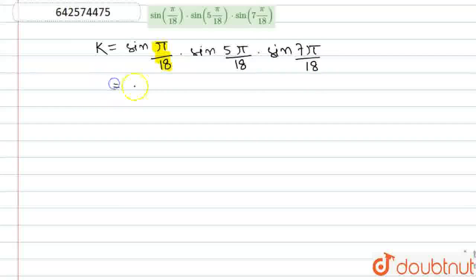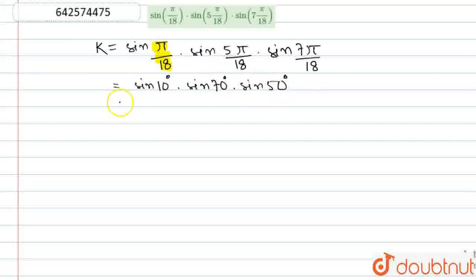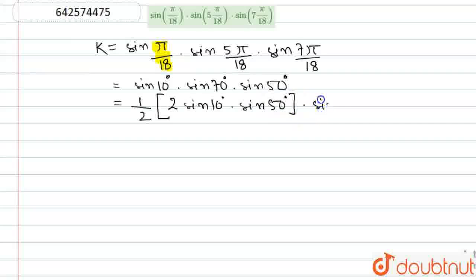So our given expression will change to sin(10°) into sin(70°) into sin(50°). These two values got rearranged — I have written sin(70°) first and then sin(50°). Don't get confused. This can be written as half into 2 into sin(10°) into sin(50°). I am taking sin(10°) and sin(50°) together so that we can apply the formula: 2·sinA·sinB = cos(A−B) − cos(A+B).